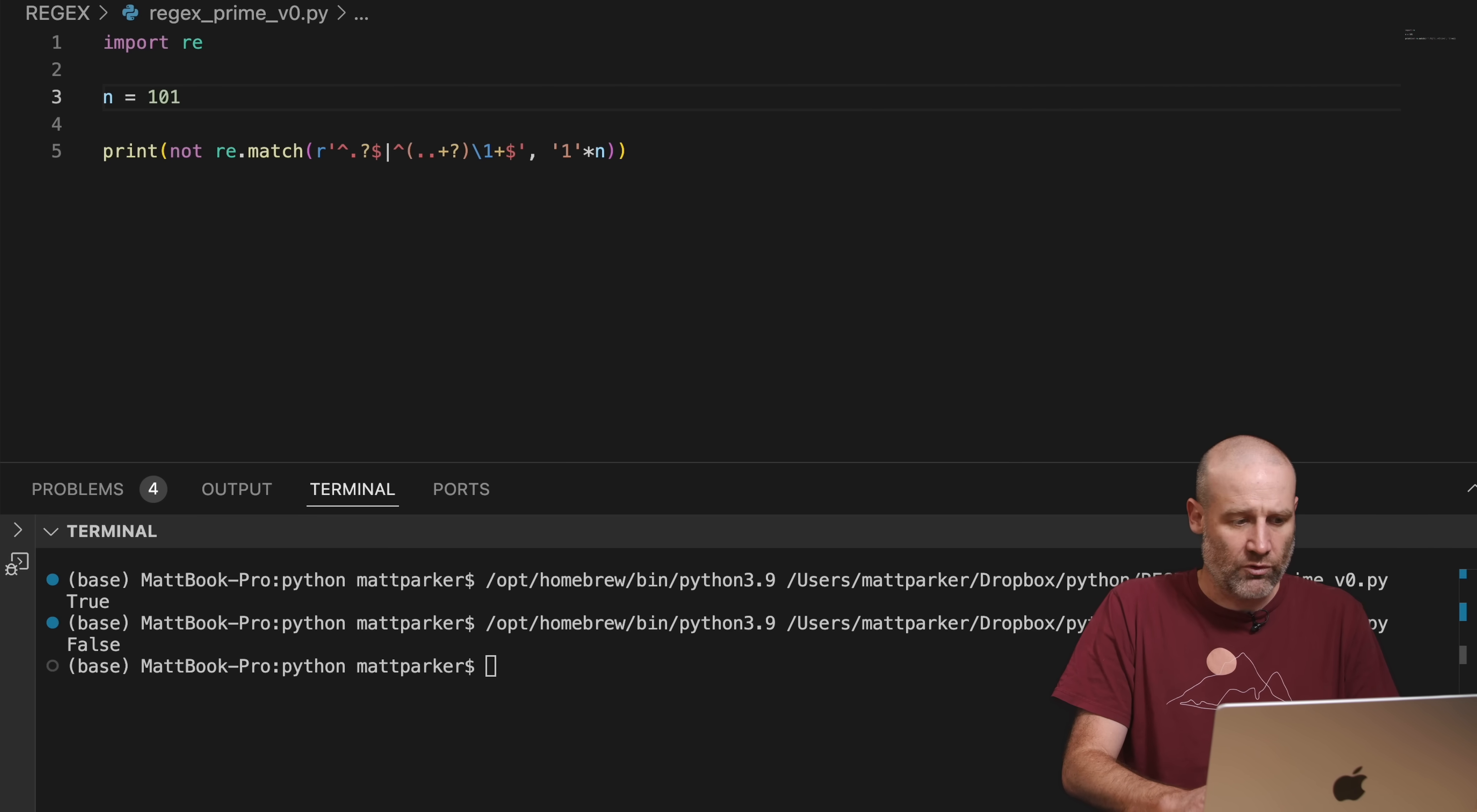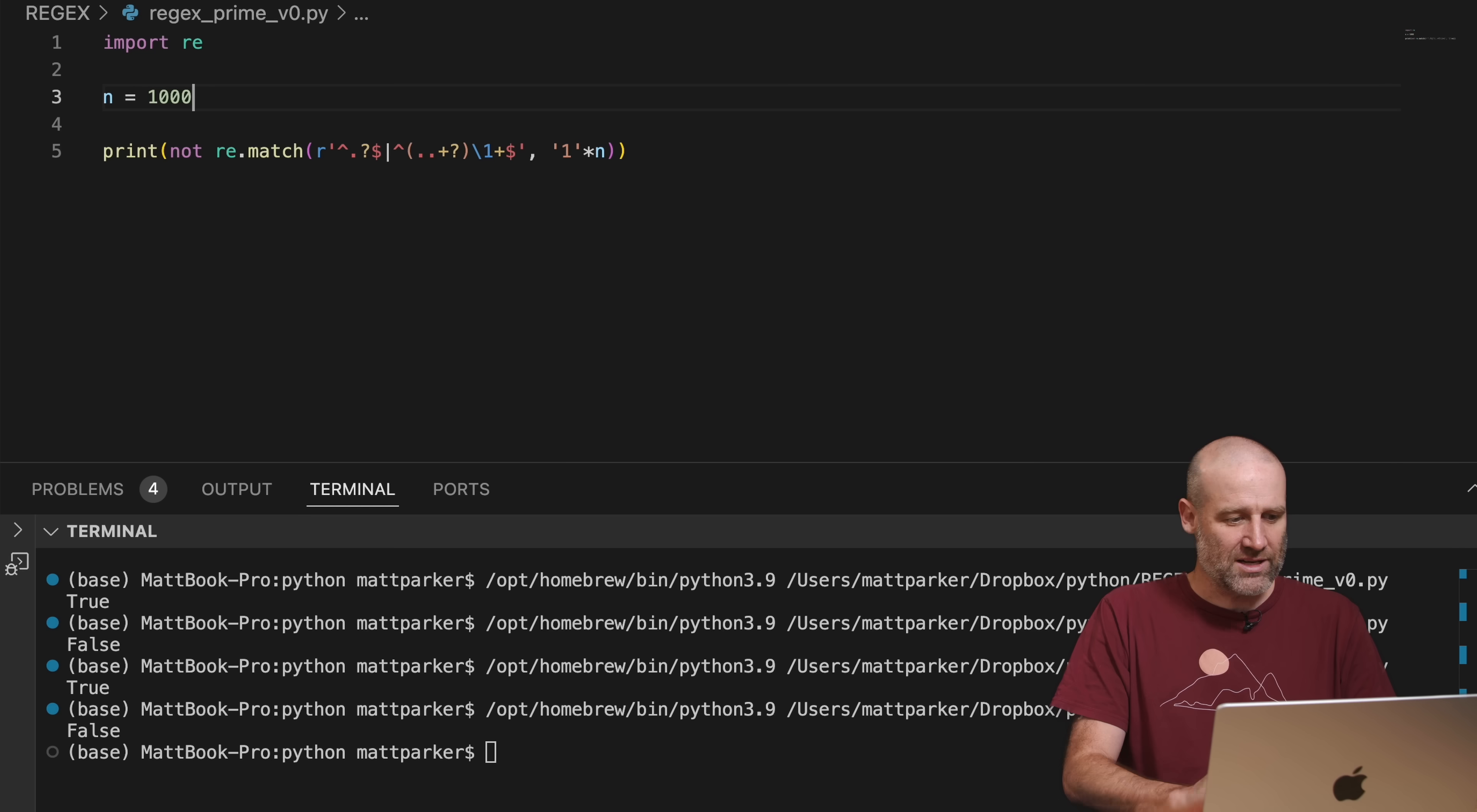101, run it, true, it's a prime. Against my better judgment, a thousand, run it, false. Okay, so it can say, I mean for reasonably big numbers, if something is a prime or not.